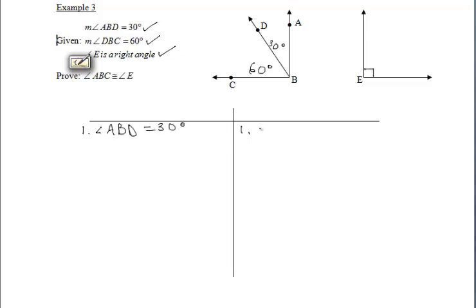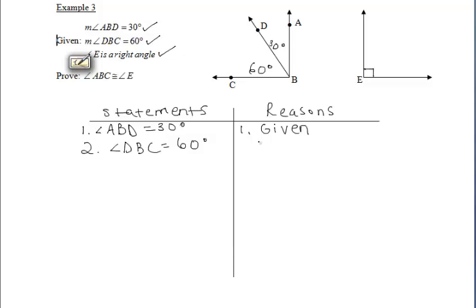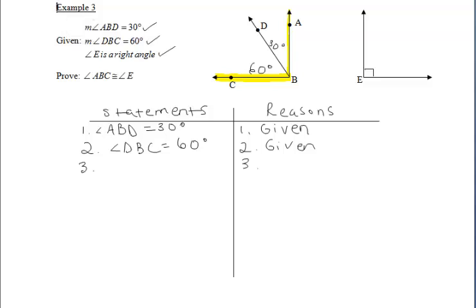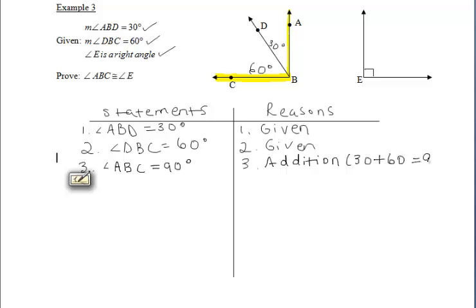The first thing we're told is that angle ABD has a measure of 30 degrees — given. Don't forget to write "statements" and "reasons" at the top; statements are specific to your diagram while reasons are general. Next, angle DBC is 60 degrees — also given. Since angle ABD is 30° and angle DBC is 60°, those two angles together make up angle ABC, so angle ABC must have a measure of 90 degrees. The reason for that is addition: 30 degrees plus 60 degrees equals 90 degrees.